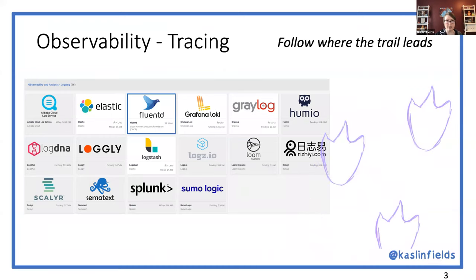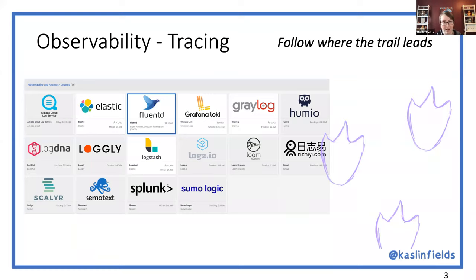Tracing is specifically about tracing one action back through the flow — something went wrong, follow the trail and see where it leads. Fluentd also has tracing capabilities. It's interesting how in the observability area many tools hit multiple checkboxes. So to summarize: observability is the overall concept, monitoring is understanding what's going on at any given time, logging is what happened before, and tracing is following a specific trail.